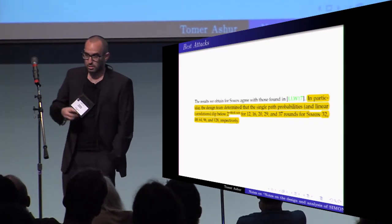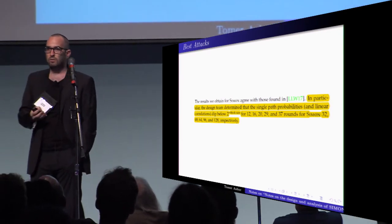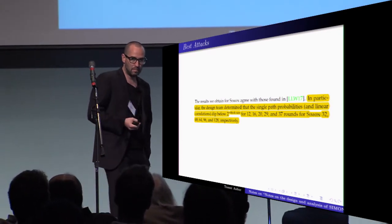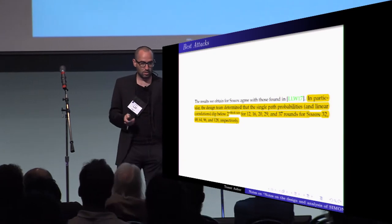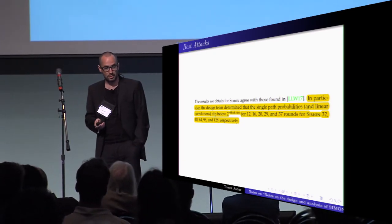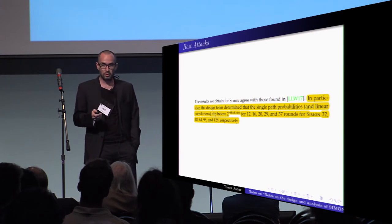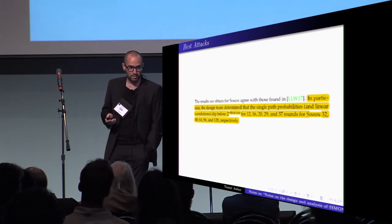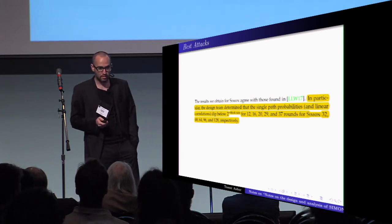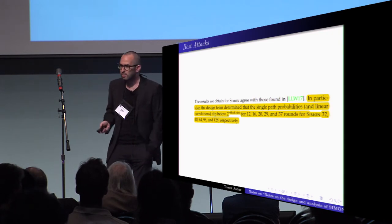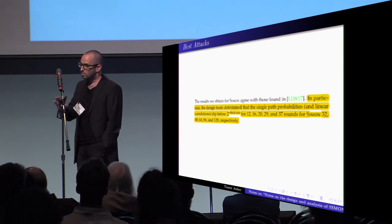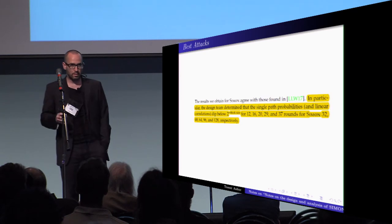And then they reiterate what kind of results us academics published, and they're saying that in particular, the design team determined that the single path probabilities and linear correlations deep below 2 to the minus of the block size for 12, 16, 20, 29, and 37 rounds for versions of Simon. I'm talking about Simon, but almost everything I say now can be applied to Spec.